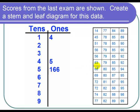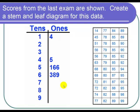In the 60s we have a 3, 8, and a 9. So I place a 3, 8, and a 9. For the 70s we have a 2, 2, 4, 7, 7, 8, 8, 9, 9, 9.